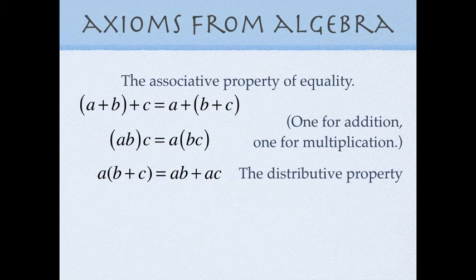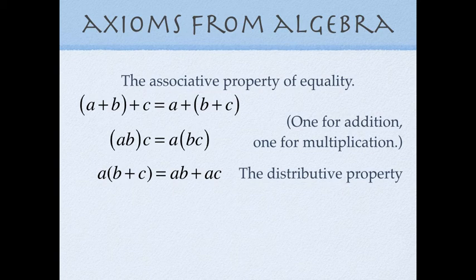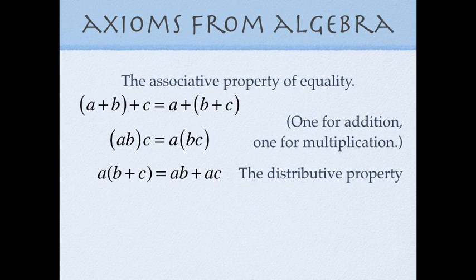Here's the associative property. In the first equation, a, b, and c appear in order on both sides, but what changes is the grouping: a and b are grouped on the left, while b and c are grouped on the right. The associative property says that the grouping doesn't matter. In the third equation, we see the distributive property — the rule you use when addition or subtraction is mixed with multiplication. The a out front is multiplied to b and c inside the parentheses, giving a·b plus a·c.